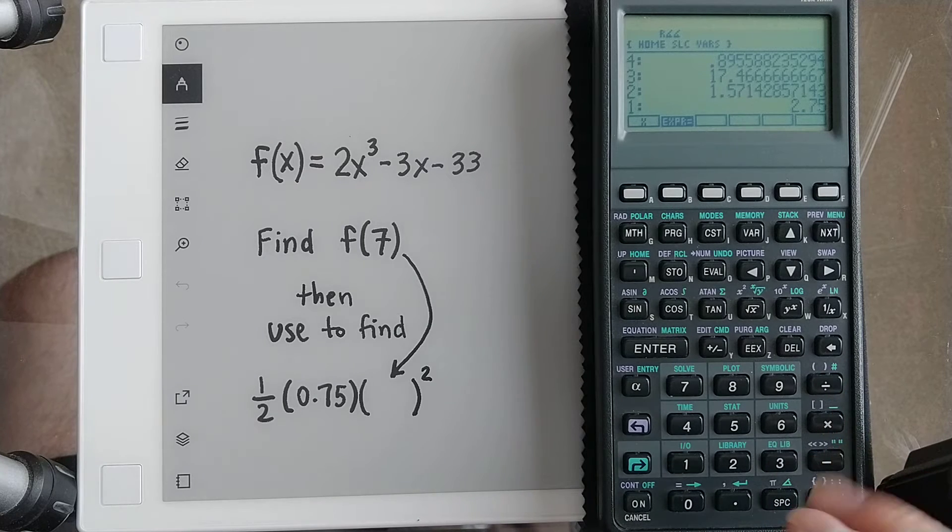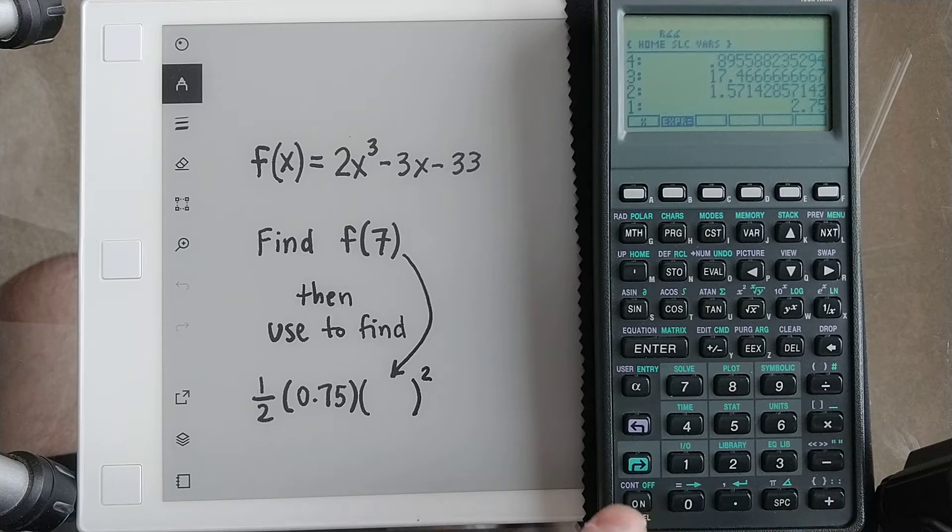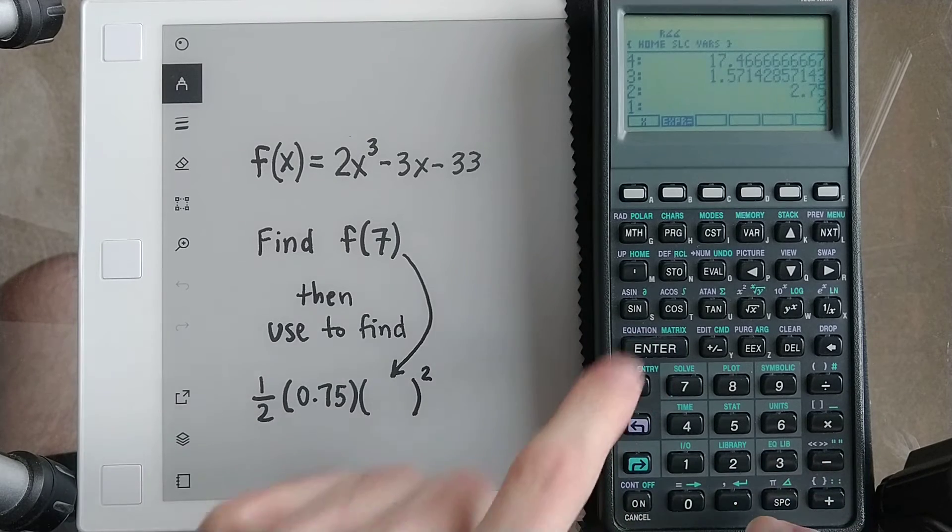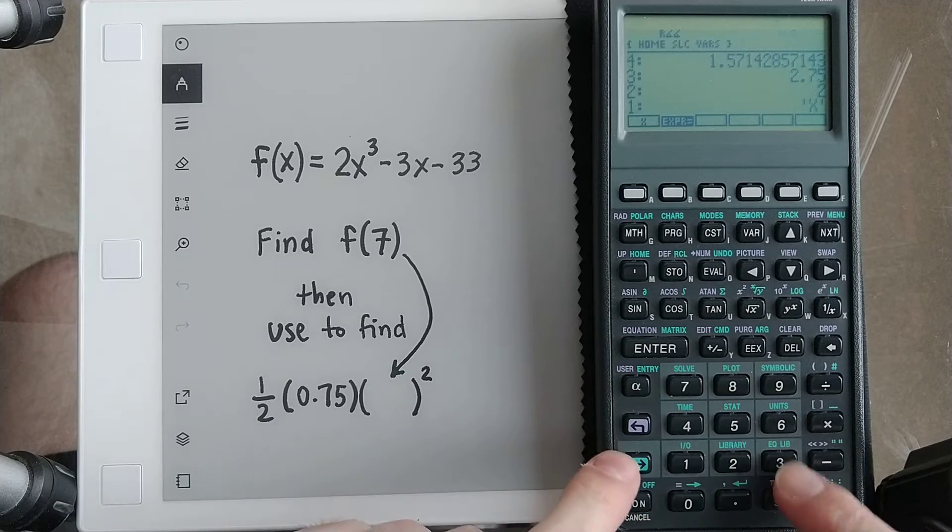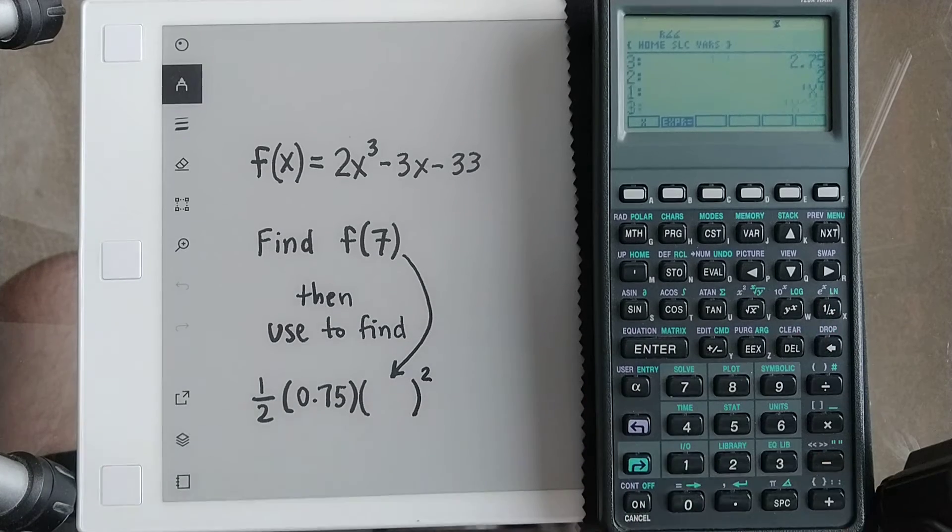So on this calculator, I'm going to type in the expression, put a 2 on the stack, put x, we're going to cube it, so I put a 3 here and then hit this to cube it.